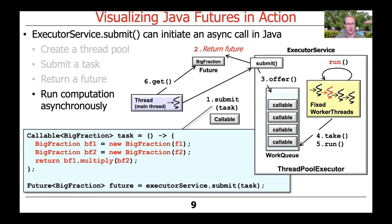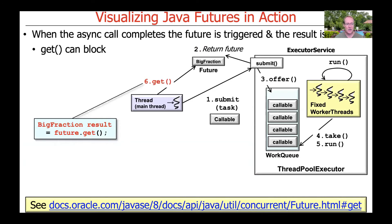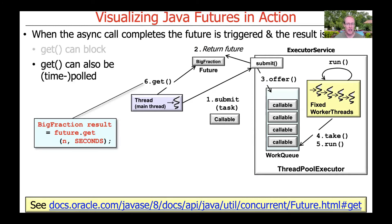At some point, the thread pool will execute that task — it'll go ahead and multiply those two big fractions together. When the asynchronous call is done, the future is completed and the result will be available. We can get it by calling get, which will block the caller until the computation is done. Or we could do what's called polling or timed polling, where you give the number of seconds you're willing to wait — or even a value of zero, which just checks if the result is there, and if not, returns immediately so you can do other work and try again later.